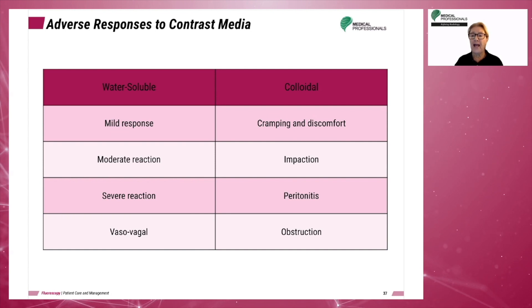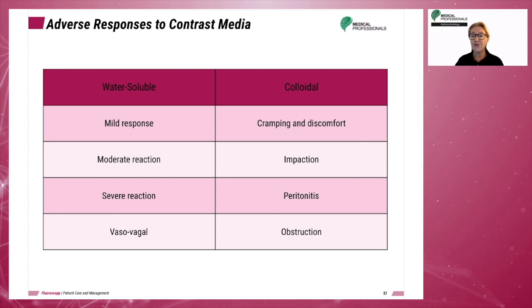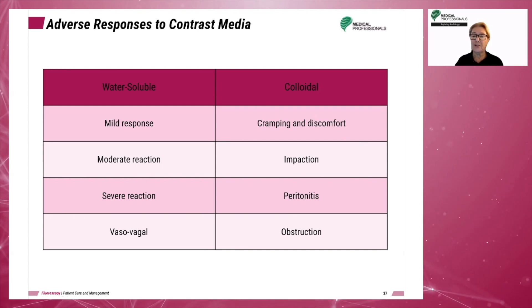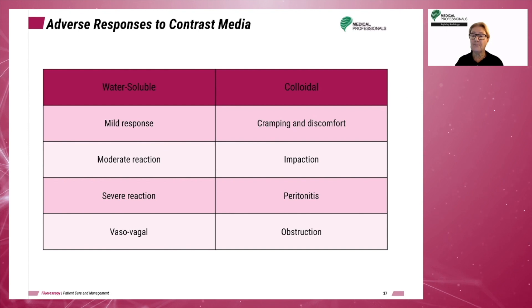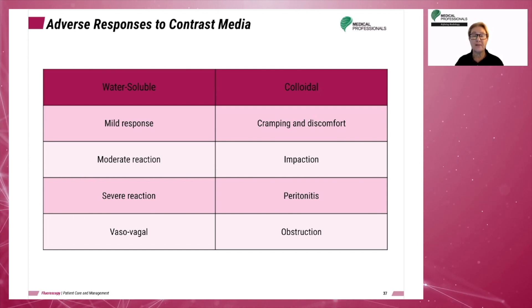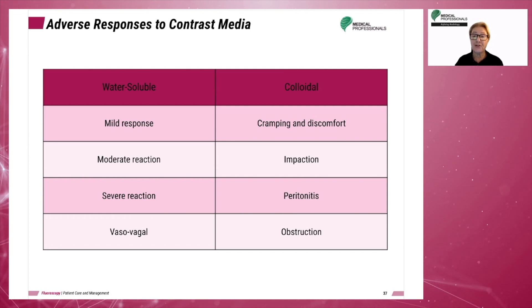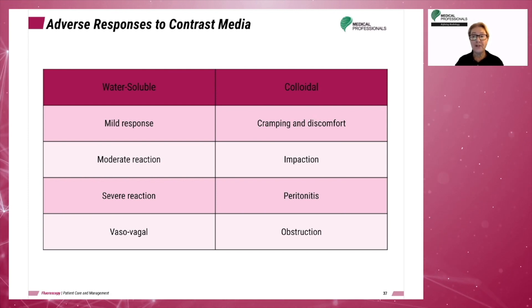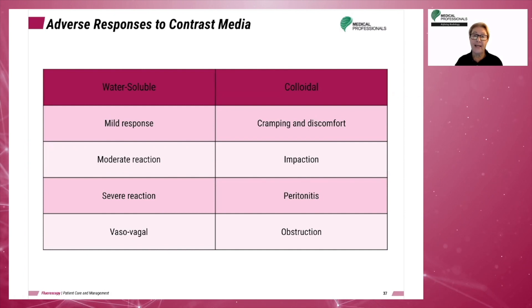A severe reaction would also include trouble breathing, a drop in blood pressure, severe swelling of the tongue causing an airway obstruction, and possibly even a cardiac arrest. A vasovagal reaction occurs when the contrast causes stimulation of the vagus nerve, causing the patient to pass out. These responses are less common when water-soluble contrast is introduced into the joint spaces, bladder, or subarachnoid spaces, though there are other considerations such as infection, inflammation, and irritation that can be experienced.